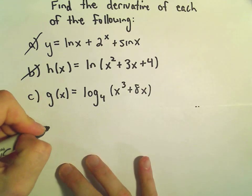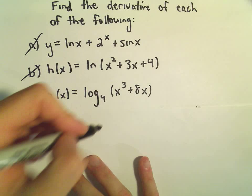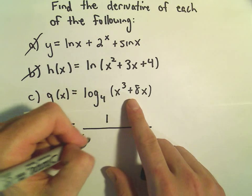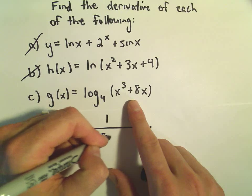When we take the derivative here, it's going to be very similar to what we did before. We'll get 1 over whatever is inside the parentheses, so x cubed plus 8x.